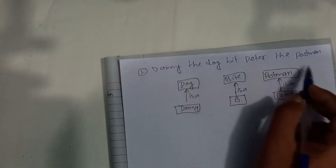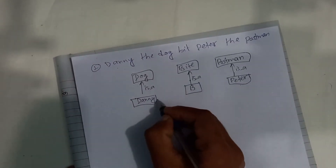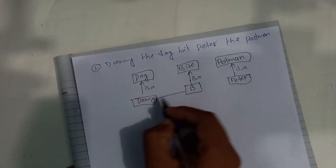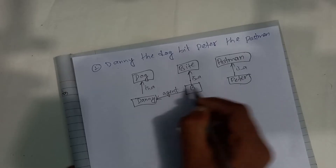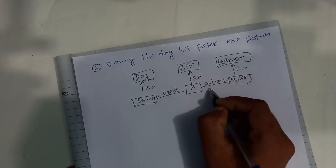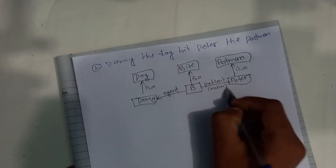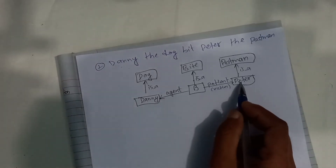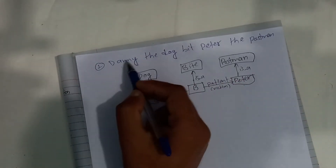Now, the dog is the agent and Peter is the postman — the patient or victim. The dog is the agent; byte is the action; and Peter is the patient or victim.